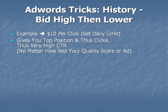Normally we want to be in positions between three and five, perhaps six — those are the best positions to be in. But at the very first couple of days of your campaign, you want to be in that top position so that you will get a lot of clicks, because that's going to drive up your click-through rate. No matter how bad your ad is or how bad your quality score is, you're going to get those clicks and it'll bring up your click-through rate.